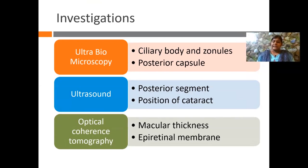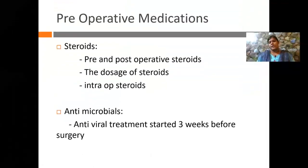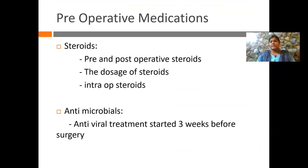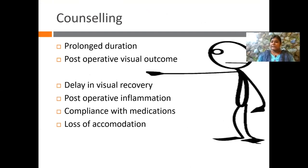Ultrasound helps to look at the posterior segment when the cataract is too dense, and OCT helps to look at macular thickness and ERM. For pre-operative medications, patients with chronic non-infectious uveitis on immunosuppressives should continue them. Proper steroid dosing in the pre- and post-operative period is very important. For patients with viral uveitis, antiviral treatment must be restarted three weeks before surgery and continued post-operatively. Counseling is essential — explain the prolonged duration of surgery, that post-operative visual outcome may be delayed, the higher chances of post-operative recurrences, and medication compliance.